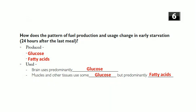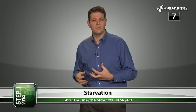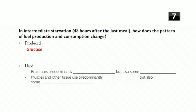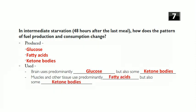Question seven: in intermediate starvation — 48 hours after the last meal — how does the pattern of fuel production and utilization change? For fuel production, you still have glucose from gluconeogenesis, fatty acids from adipose tissue (which are becoming much more important now), and also ketone bodies from the liver. The brain uses predominantly glucose but also some ketone bodies; muscles and other tissues use predominantly fatty acids but also ketone bodies.